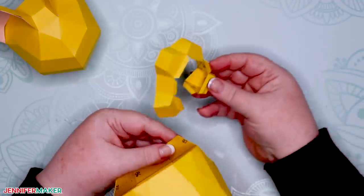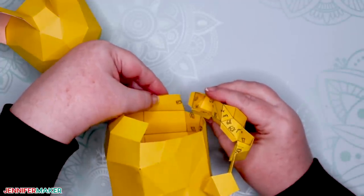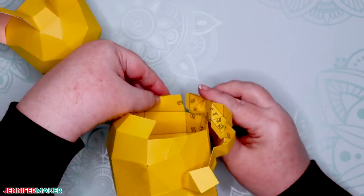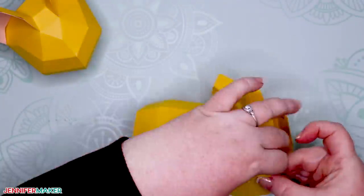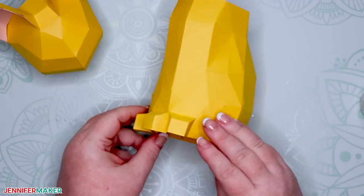So let's go ahead and attach the feet to the body. Remember to match up numbers. I started with number 131. Go slow and go one tab at a time. Here's what our 3D cat looks like with its little paws attached.